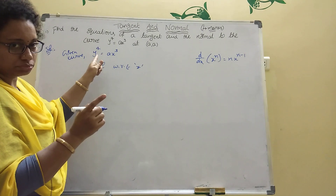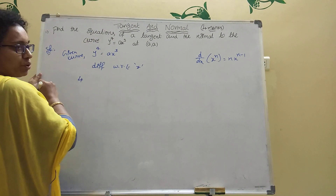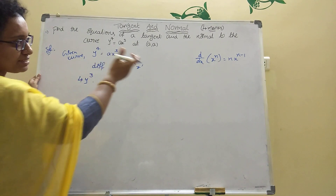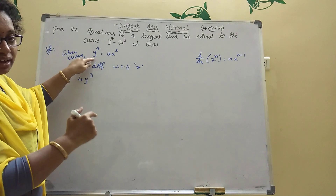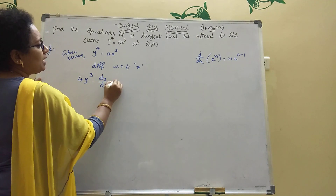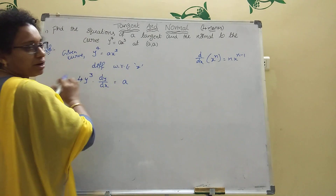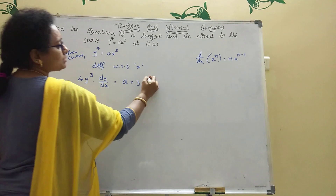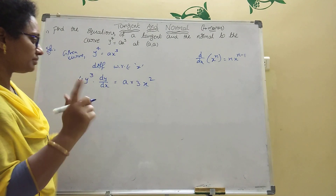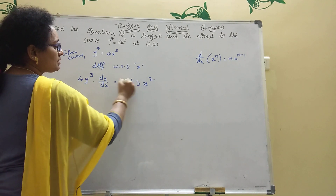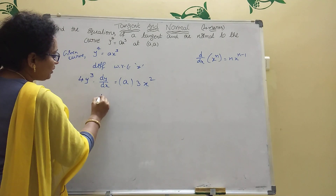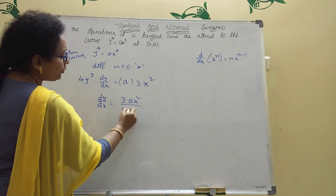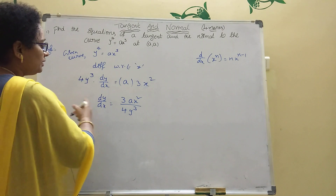Differentiating y⁴ = ax³ with respect to x: 4y³ · dy/dx = 3ax². Now we want only dy/dx, so dy/dx = 3ax² / 4y³. This is the derivative. Then at point (a, a), x-coordinate is a and y-coordinate is a. We apply those values.